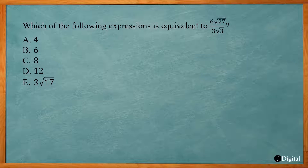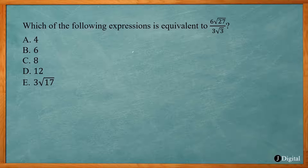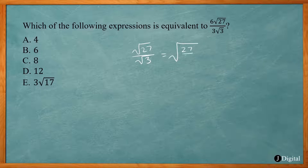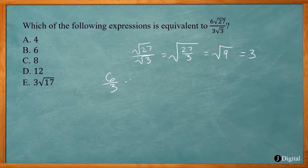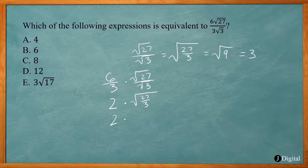Our next example says which of the following expressions is equivalent to 6 square root of 27 divided by 3 square root of 3. You could rationalize the denominator, but here I want to use the property that square root of 27 over square root of 3 is the same as square root of 27 divided by 3. 27 divided by 3 is 9, and square root of 9 is 3. So you can split this up: 6 divided by 3 times square root of 27 over square root of 3. 6 divided by 3 is 2, and square root of 9 is 3, giving you 2 times 3, which is 6. So answer choice B.